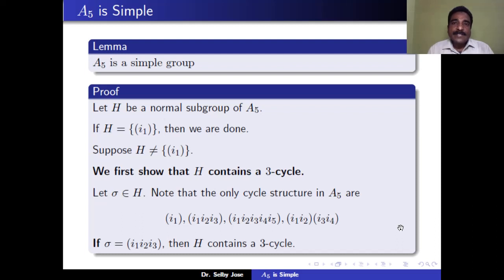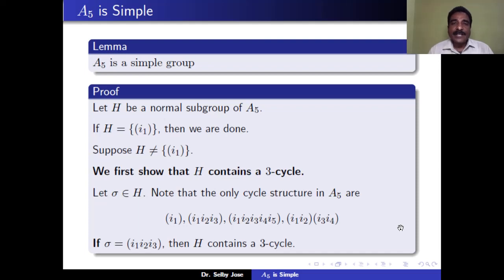We first show that H contains a 3-cycle. Let σ be a non-identity element of H. If σ is already a 3-cycle of the form (i1, i2, i3), then because σ is in H, H contains a 3-cycle.